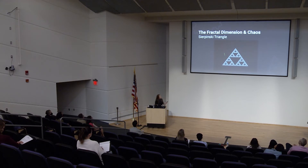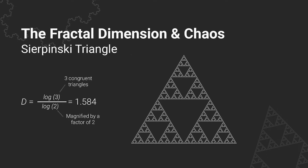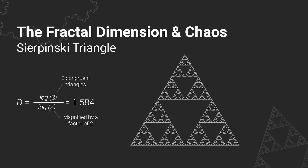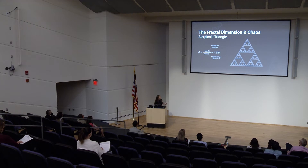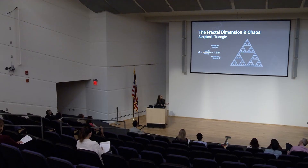Now if you look at the Sierpinski triangle, we can make three identical triangles, each needing to be magnified by 2. D equals log 3 over log 2, which gives 1.584 — almost 1.6. This is very close to the intuitive answer people give when asked about the dimension of the Sierpinski triangle, which usually averages around 1.6.